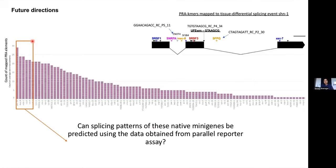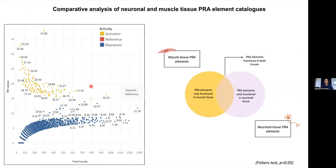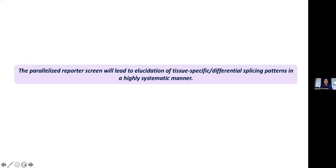The potential future directions are: I've found different genes with many PRA elements enriched in them. I'll take the top five and try to predict splicing patterns of native mini-genes using data from my PRA reporter assay — if I have a PRA element in one of these mini-genes, I can mutate it and see how splicing is affected. On similar lines, I've also generated a catalog for muscle tissue, and I'll now compare these two tissue-specific catalogs of cis elements, finding common elements as well as elements functional only in one tissue type. This parallel reporter screen will lead to elucidation of tissue-specific differential splicing patterns in a highly systematic manner. Thanks, and I'll be happy to take any questions.